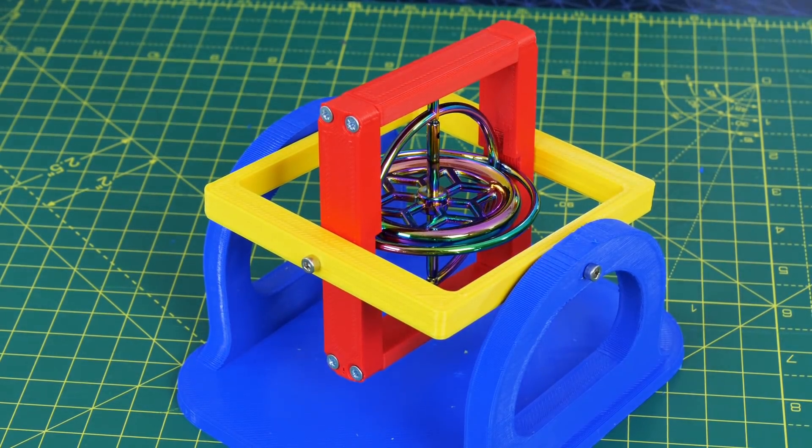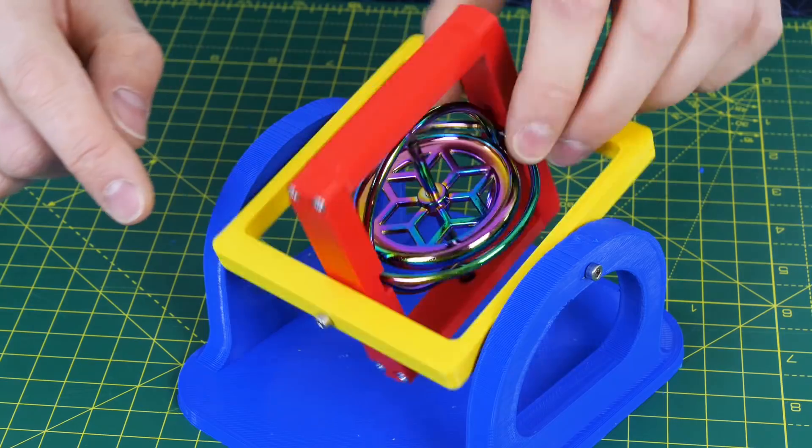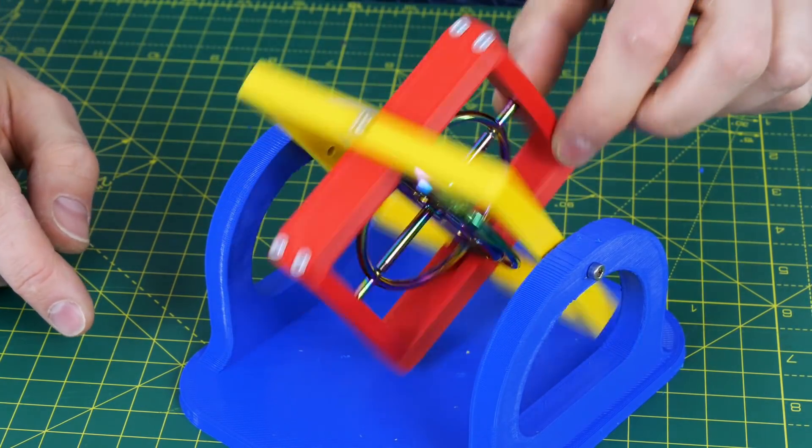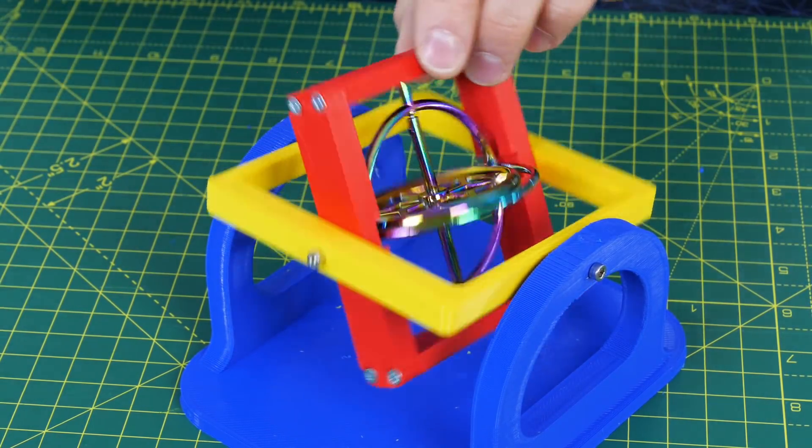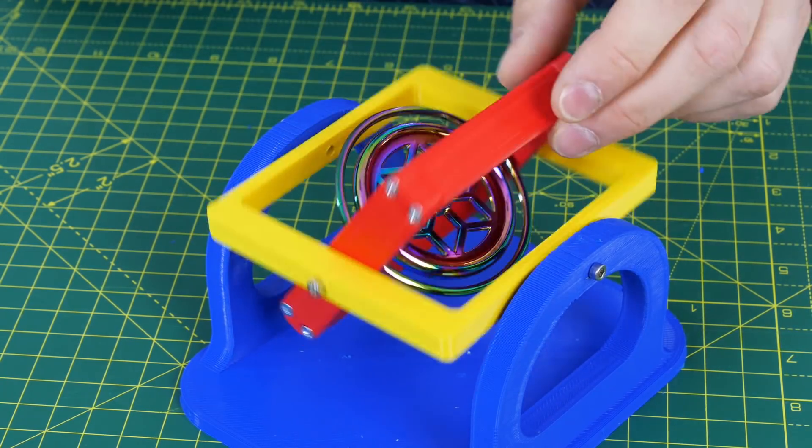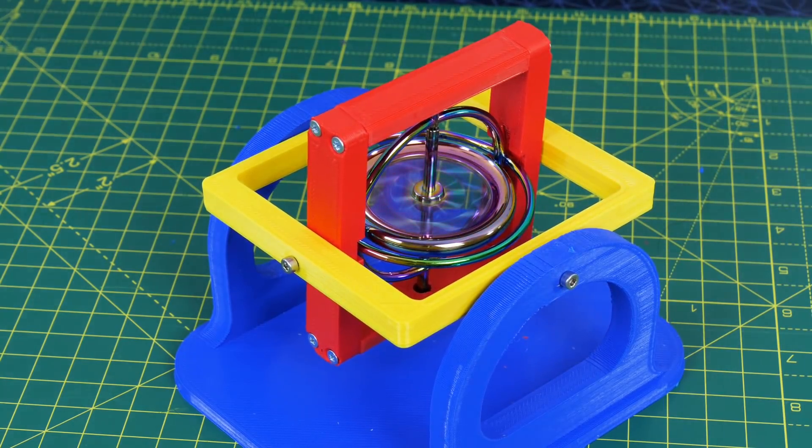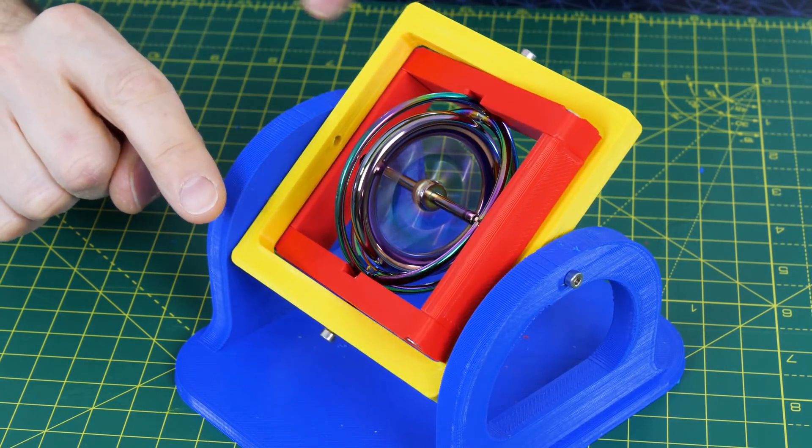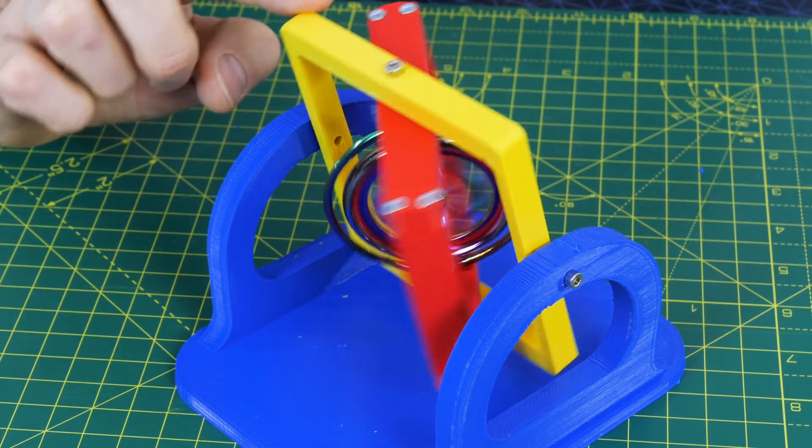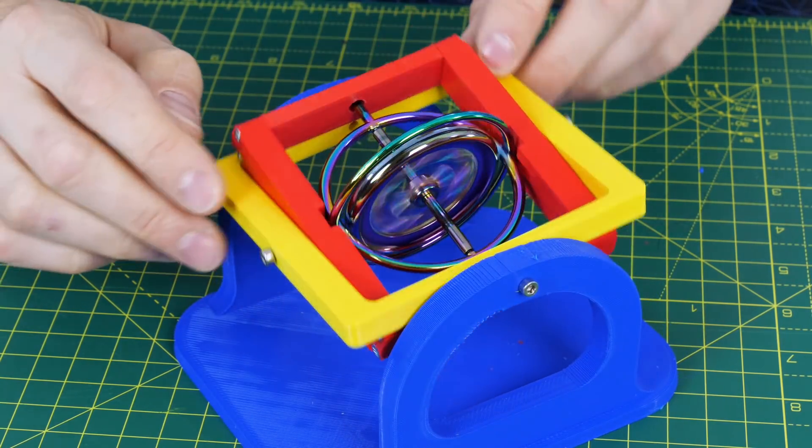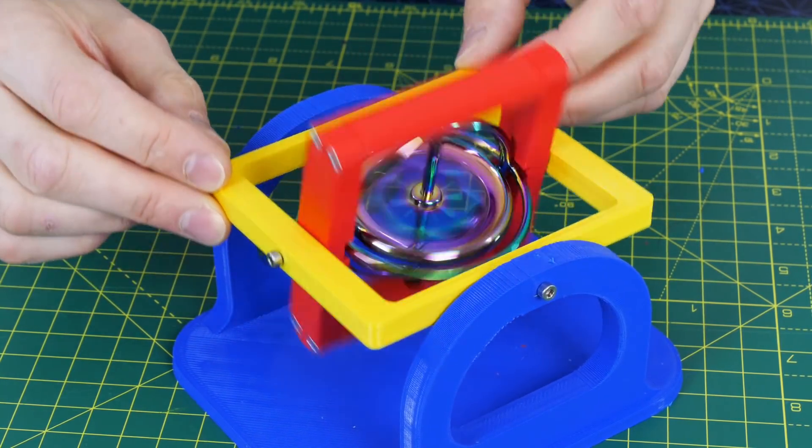However we can use this gyroscopic precession to our advantage so I've now fixed the gyro into a gimbal so it can move in two axes. And we're going to spin the gyro up and see what happens. So now we can see as I tilt the yellow part the gyro moves with a perpendicular force and makes the red part roll and that seems to work pretty reliably.